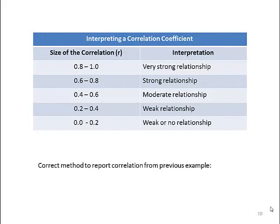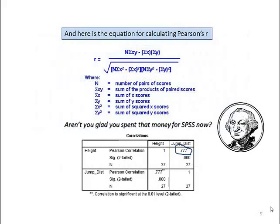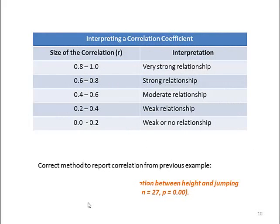It would be quite a laborious task to calculate Pearson's r for a data set of 300 people. How do you interpret the r? There's a nice chart in your book and here on the slide: 0.8 to 1 represents a very strong relationship, whereas 0 to 0.2 is weak or no relationship. If you were to report the correlation from our previous example — height correlated to the ability to jump a long distance — we would write that as there was a strong positive correlation between height and jumping distance. Make note that on your assignments you have to report data correctly.